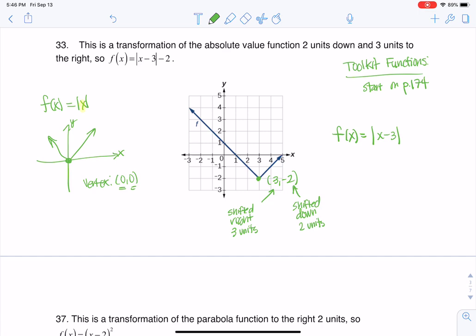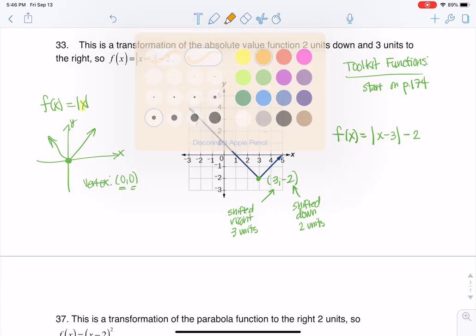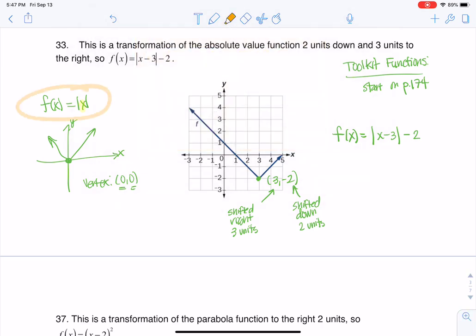And then on the outside of those grouping symbols, I'm going to have a minus 2 to shift me down. That's how we transform that equation. I had my original toolkit function, and if I want to shift it right 3 and down 2, there's my new equation. All right, thanks so much. Bye.